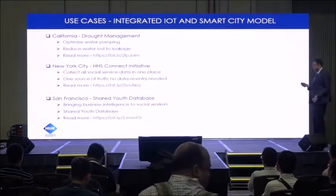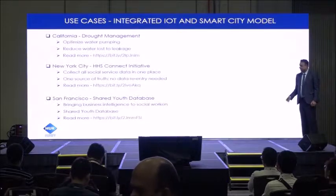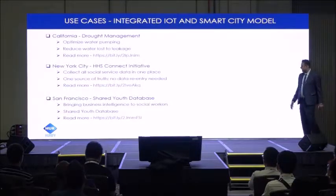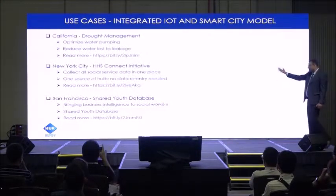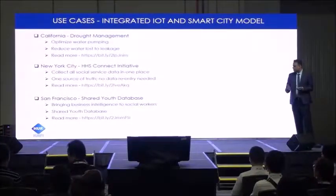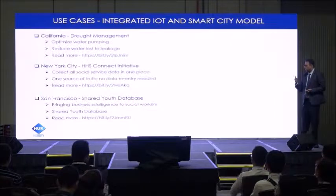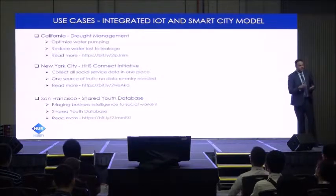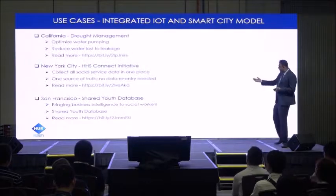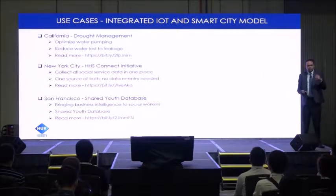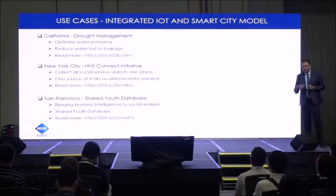Some use cases that are actually running: California has a drought management system that can optimize water pumping, reduce water leakage, and detect water leaks. The New York HHSS initiative can collect all social services data in one place — one source of truth — with no need to re-enter data; it can be done through a fingerprint. San Francisco has a shared database for bringing business intelligence to social workers, and it can detect various youth who are at risk so appropriate actions can be taken.